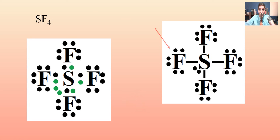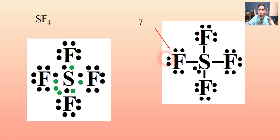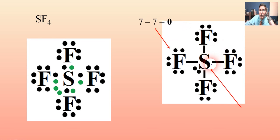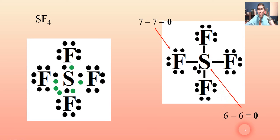Let's check the formal charge again. For fluorine: normally seven according to the periodic table, and we subtract seven — that gives us zero. For sulfur: normally six, and we subtract the four bonds plus the unshared pair, which counts for five and six — so that's zero as well. This is a good structure.